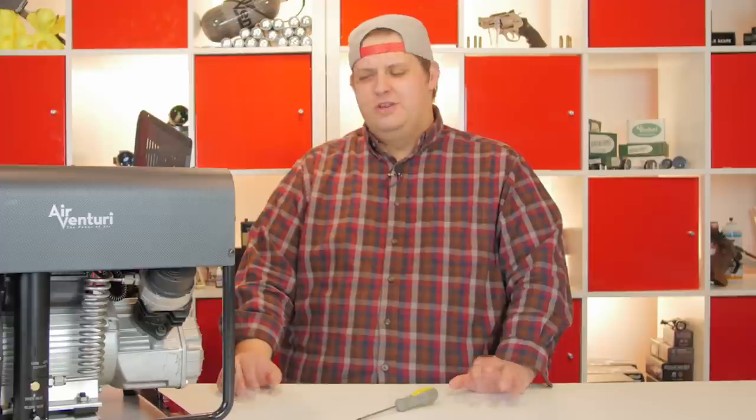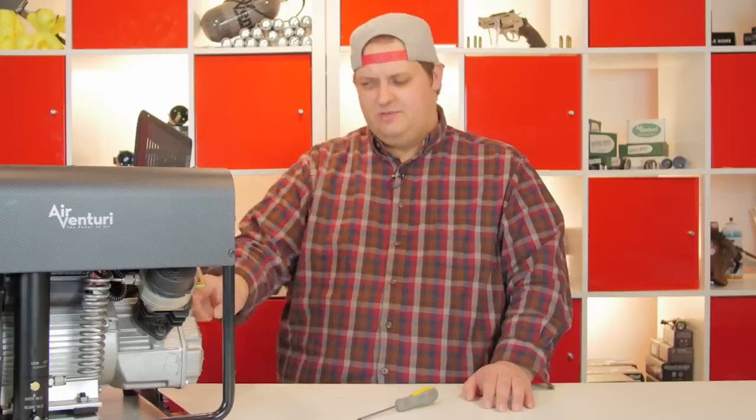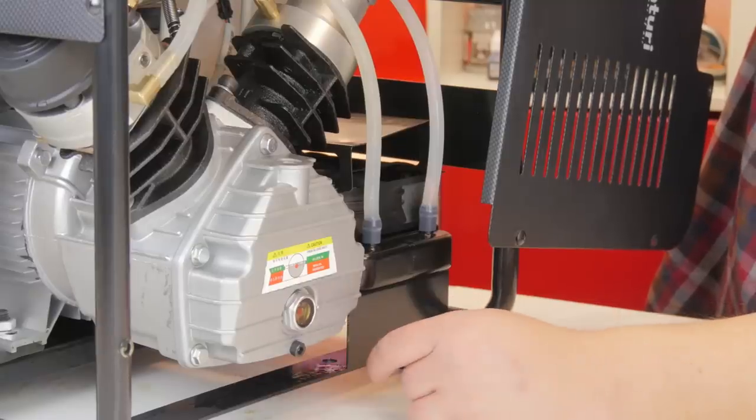On your oil pan, you'll notice that when you receive it, there will be a plug here where the breather tube normally goes. It'll be a little red plastic plug. So what you'll do is you'll grab your Allen key and make sure that this drain plug is closed all the way.